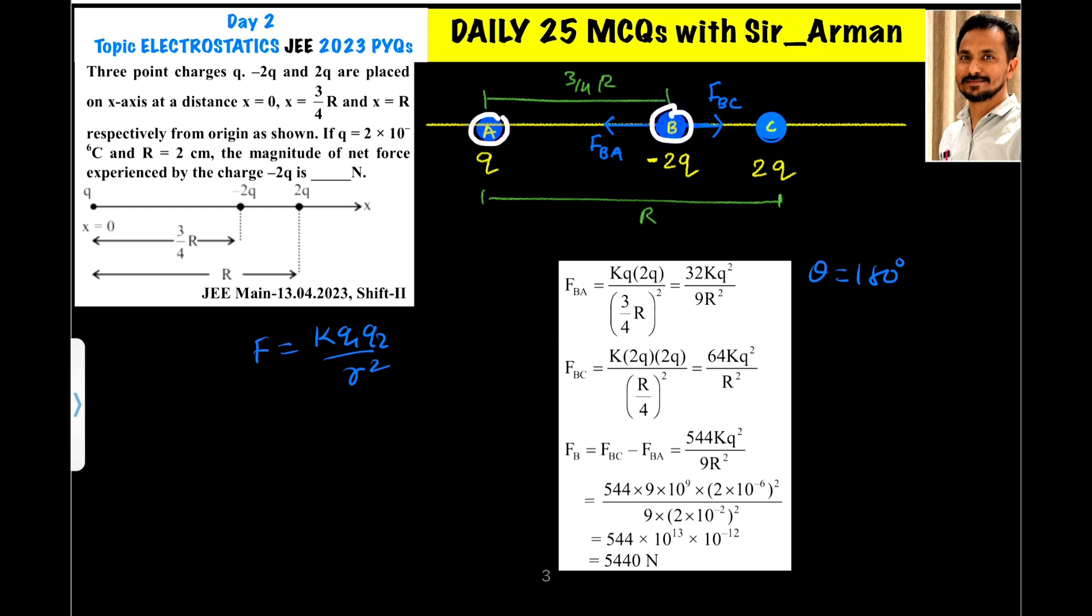So force on B by A, which is at a distance 3/4 r, F_BA = k × q1, so it is q, then q2 is 2q, divided by the distance 3/4 r, so (3/4 r)². If you solve this you will get 32kq²/9r², because 3 × 3 = 9, this 4 will go up so 4 × 4 = 16, and here it is 2, so it is 32kq²/9r².